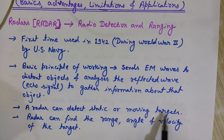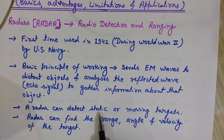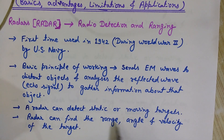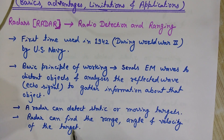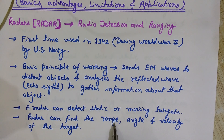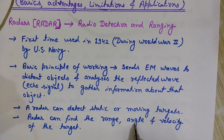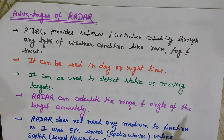A few key points about radar: a radar can detect static or moving targets. It can find the range, angle, and velocity of the target — all three can be measured. What is the range, at what distance is it situated, at what velocity is the target moving, and at what angle is it approaching or going away.